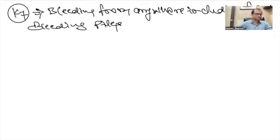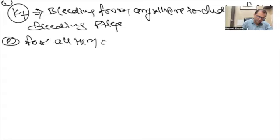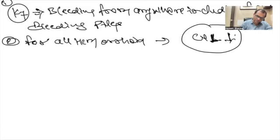Kidney 7 is having connection with the fluid metabolism. So the tip number 1: Kidney 7 means bleeding from anywhere including from bleeding piles. The rule number 2: For all hemorrhoids we always use CB1. We always use CB1 sedation. Mooladhar Chakra CB1.